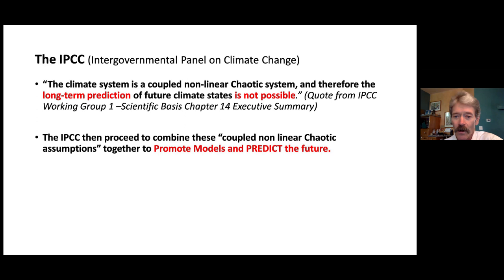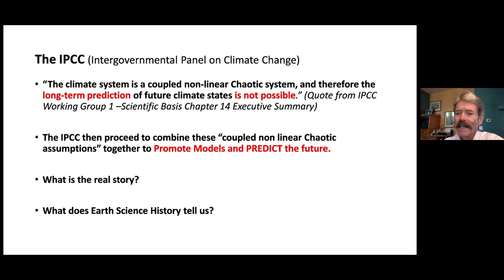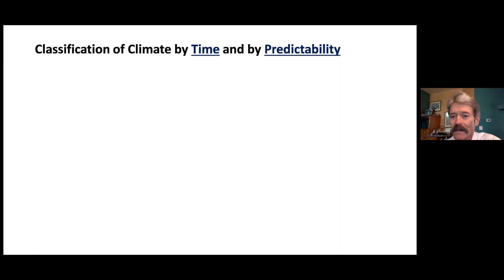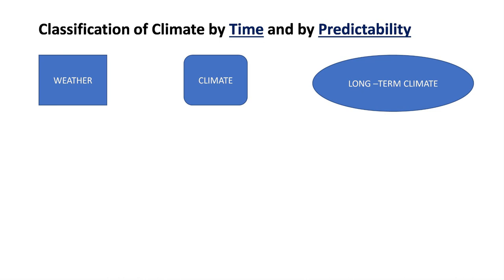So what is the real story? What does Earth's science history tell us? As stated in parts one and two, the long-term evidence is available and we should not disregard it by focusing only on the last 200 years, as the IPCC have done. One way of analyzing climate is by classifying it as a function of time and predictability. Weather deals with time scales of hours, days, or weeks; climate deals with decades; and long-term climate change involves time spans of millennia.